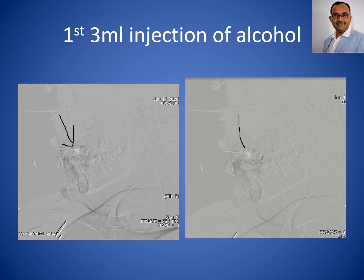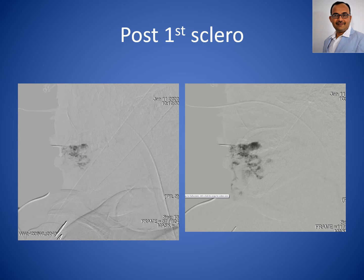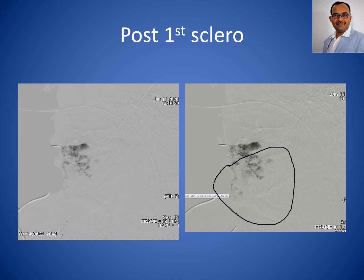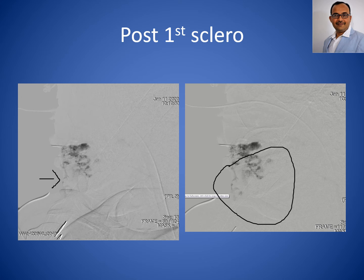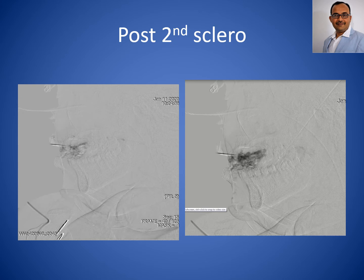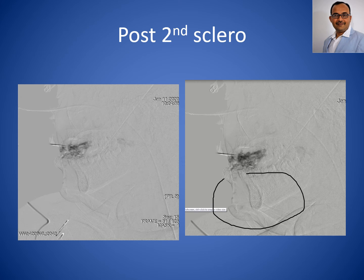Here, the white color you can see on the angiography is the negative flow map technique. After 3 ml injection of absolute ethanol within the lesion and waiting for 10 minutes, when I injected contrast, almost 50% of the lesion was not filling up — so that portion is obliterated. There was still a small portion filling up, so I injected another 2 ml of absolute ethanol. After that, almost 80% of the lesion was not filling up and is obliterated.